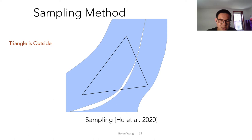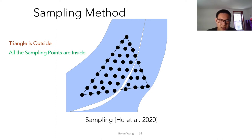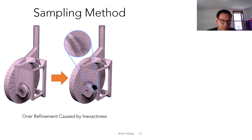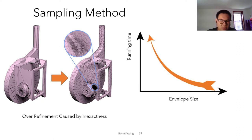However, the sampling method is not exact. This is a case of a triangle outside of the envelope where all the sampling points are inside, so the sampling method gives us the wrong answer. This can cause the remeshing algorithm to go into wrong branches, which can lead to problems like over-refinement — we can see that the mesh in the circle is very dense. Also, if the envelope size shrinks, we need to sample the triangle denser and denser, which requires longer and longer running time.